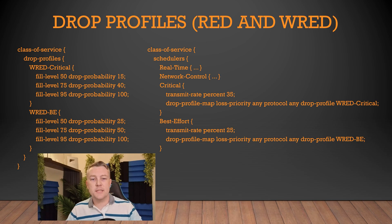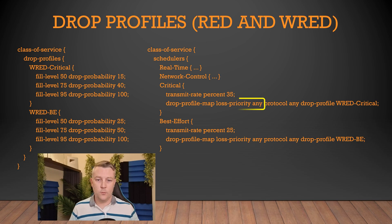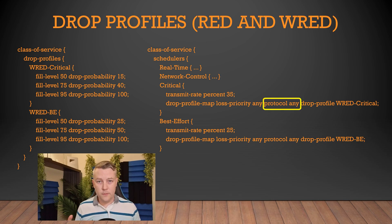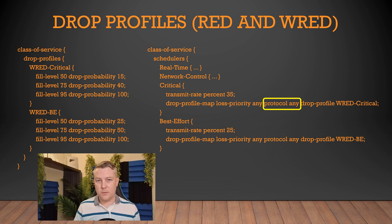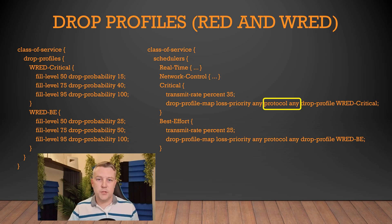The map supports choosing a specific loss priority, meaning that the forwarding class can have multiple drop priorities within it. If it does, we can apply these profiles to just one of those loss priorities, or both, or all of them. We can also choose the protocol we apply this to — some platforms require you to apply it to all protocols, some you can do it to just TCP. Applying it to just TCP is good if you can, because TCP can manage the resending of those packets when the sender has slowed down. But your platform may just force you into applying it to all traffic.